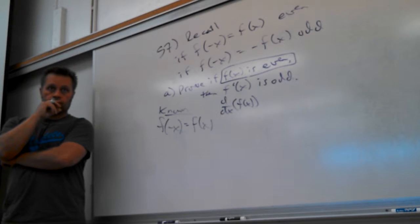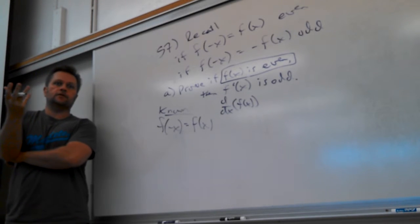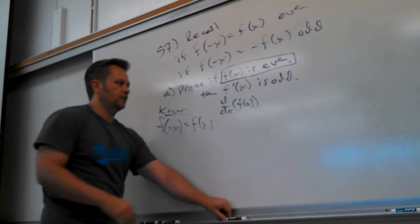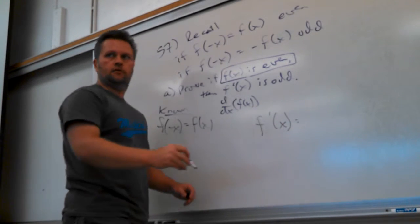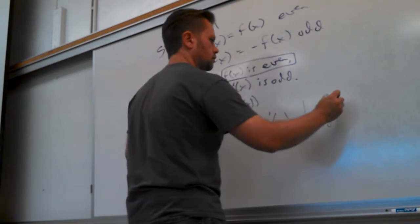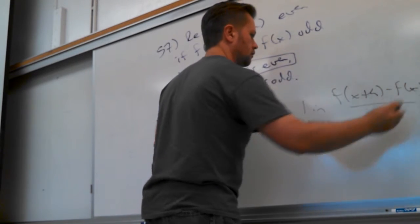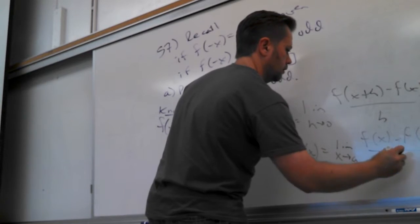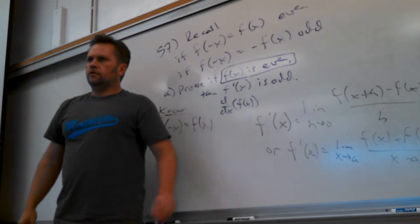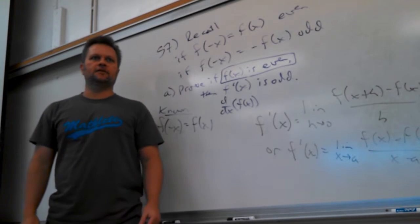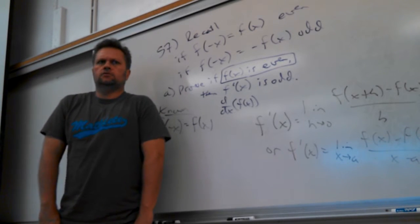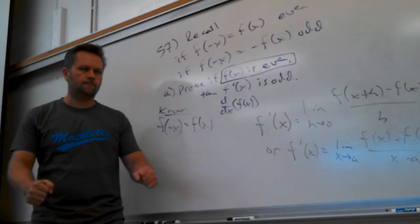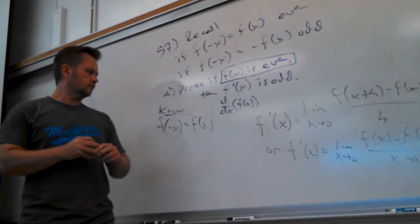There's no connection if you just say f prime, because it has to be connected to f. The only thing we know so far is what f prime is. By chapter 2.8, all we know for f prime is one of two things: either the limit as h goes to zero, or f prime is the limit as x goes to a. One of those is better to use.